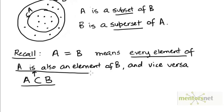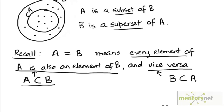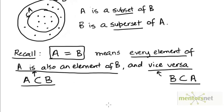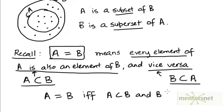So every element of A being an element of B means that A is a subset of B, and the converse — stating that every element of B is also an element of A — is the same as claiming that B is a subset of A. So in other words, to say that two sets A and B are equal means to say that A is a subset of B and B is a subset of A. We say that two sets A and B are equal if and only if A is a subset of B and B is a subset of A.